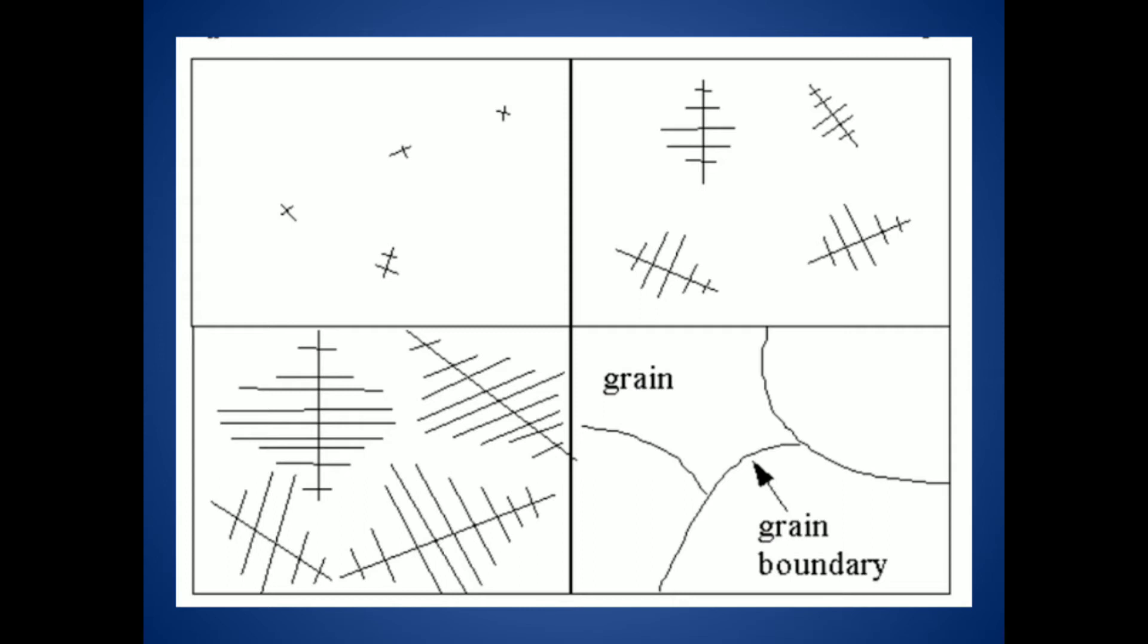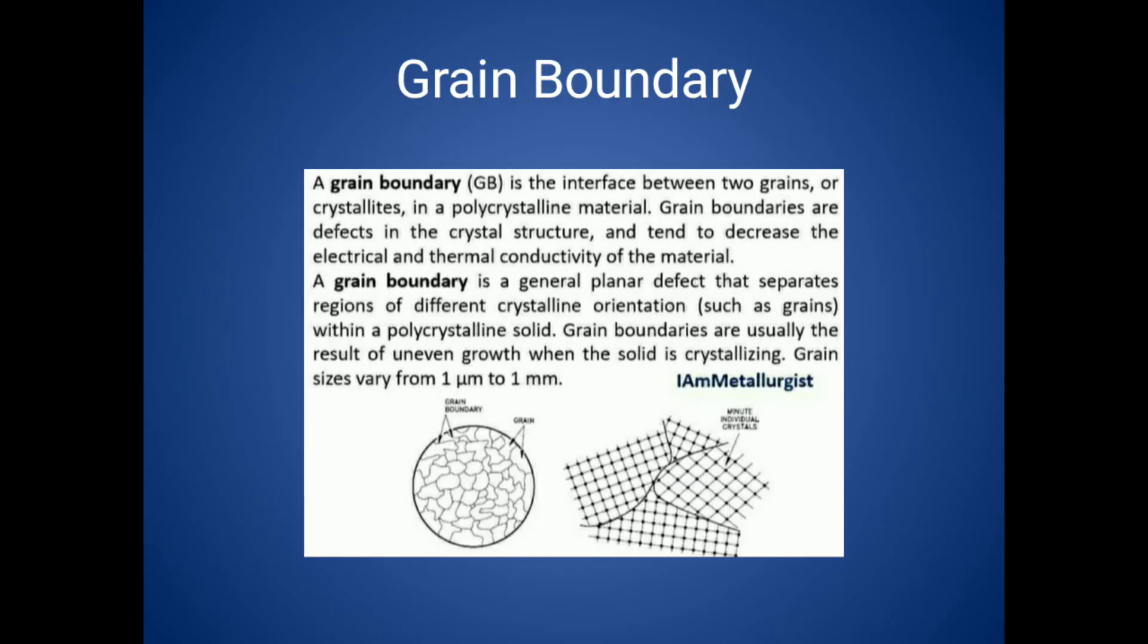The structure will be like a tree - that is called formation of a dendrite. This structure is very important from your exam point of view. Next is the grain boundary. Grain boundary is nothing but the interface between the two grains.